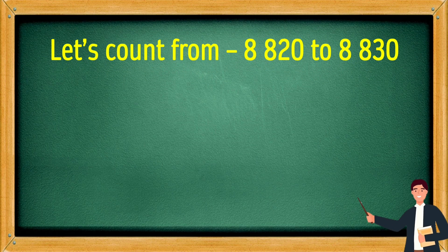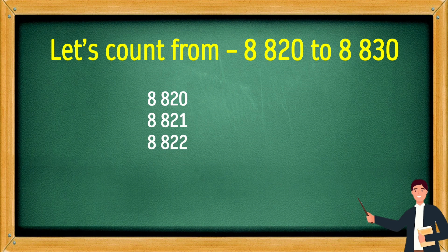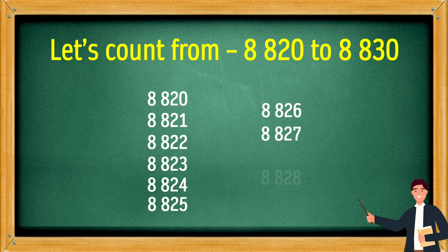Let's count from 8,820 to 8,830. 8,820, 8,821, 8,822, 8,823, 8,824, 8,825, 8,826, 8,827, 8,828, 8,829, 8,830.